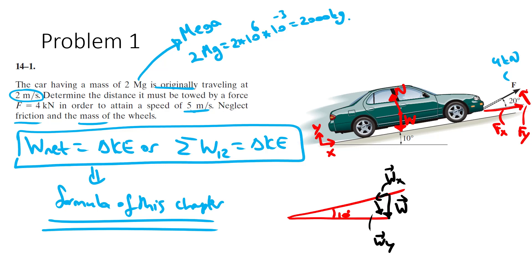Since the incline is at 10 degrees, we analyze the angle geometry. The angle between W and the y-axis is 10 degrees, the right angle is 90 degrees, leaving 80 degrees. The x and y axes are perpendicular to each other at 90 degrees. So Wx = W × sin(10°) and Wy = W × cos(10°). We have Wx, Wy, Fx, Fy, and the normal force identified.